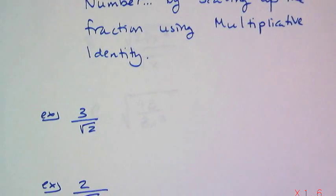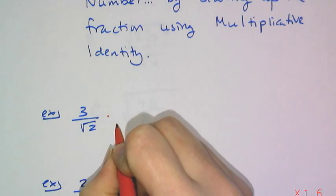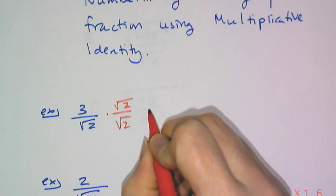A very basic level example first. I have 3 over the square root of 2, which is not simplified. And so what I need to do to simplify this is to multiply this fraction by 1, but I get to choose what 1 looks like. And in this case, I'm going to choose 1 to look like the square root of 2 over the square root of 2, because when I do that.